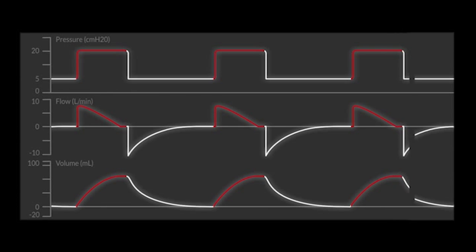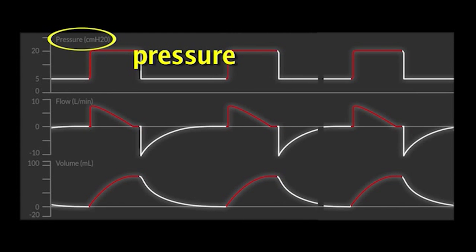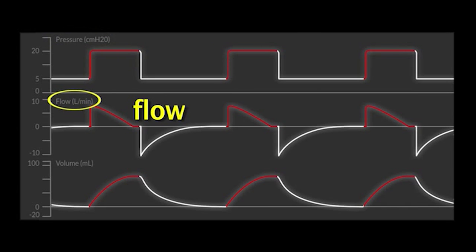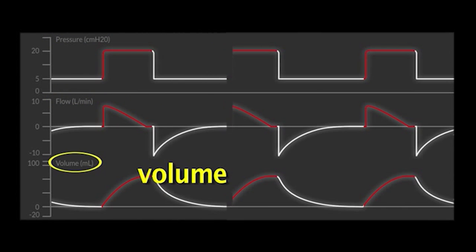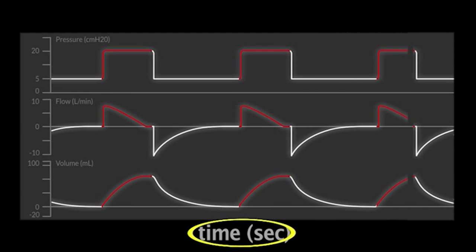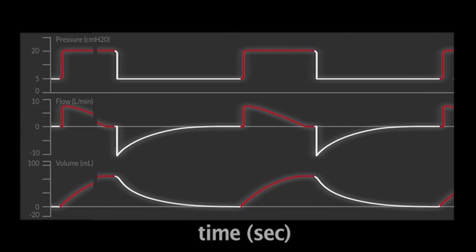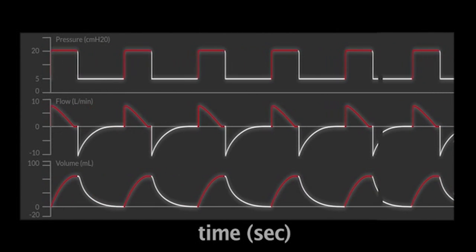Each of these three waveforms has a different horizontal axis depending on which you are looking at. For pressure, it is going to be in centimeters of water, a unit of pressure. For flow, it is typically displayed in liters per minute, and we have a positive and a negative. And then finally the volume is just a volume unit, either mLs or liters. On the horizontal axis, time is typically displayed in seconds and you can adjust this to display more or fewer breaths depending on how much information you have set to display at a time.